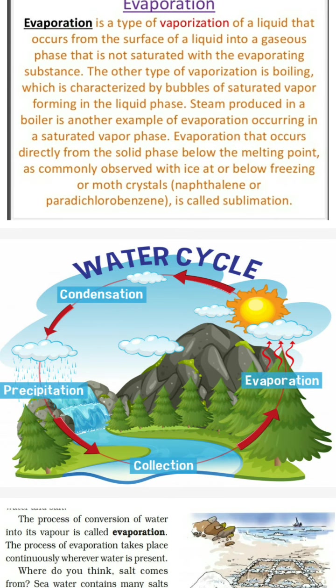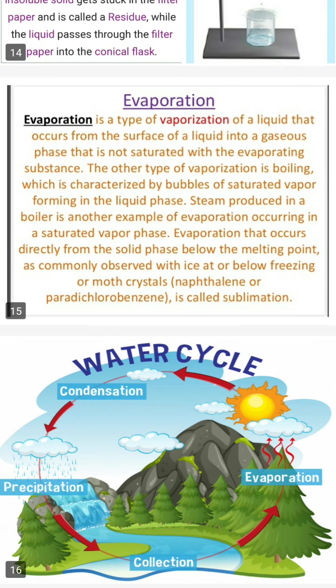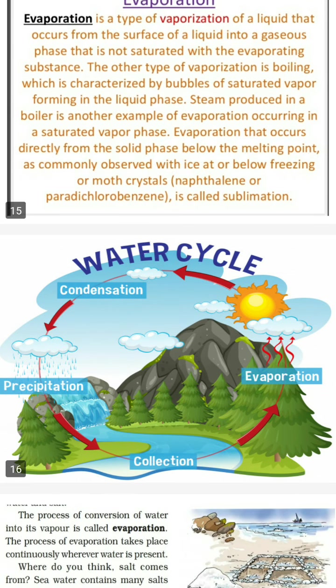When water becomes vapors, our water droplets change into condensation. Because condensation is the opposite of evaporation. Evaporation means water changes into water vapor, and condensation means water vapors change into water. Pehle water collection hota hai by the process of evaporation.